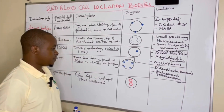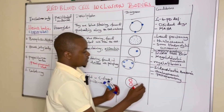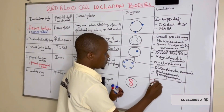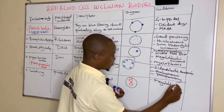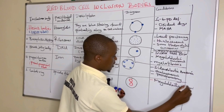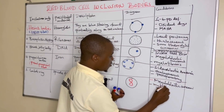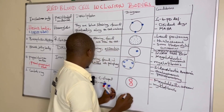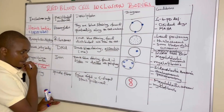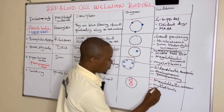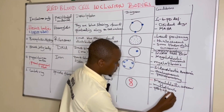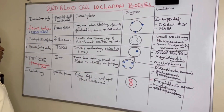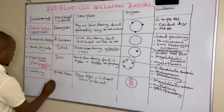Cabot rings are seen in megaloblastic anemia and myelofibrosis. They can also be seen post-splenectomy. So these are some of the conditions where we find Cabot rings.